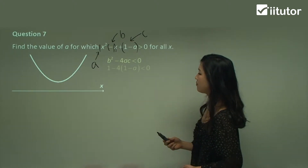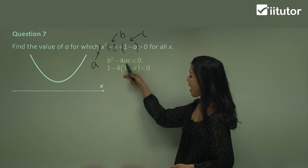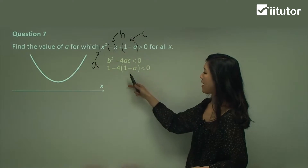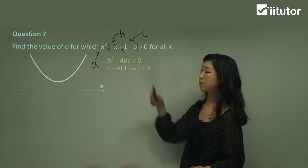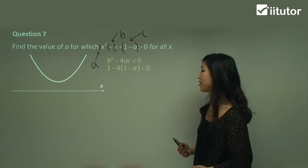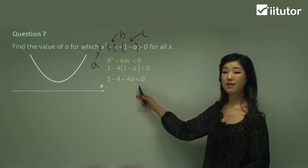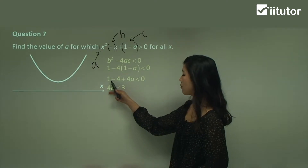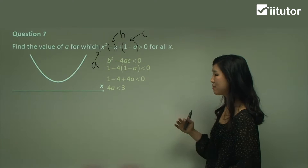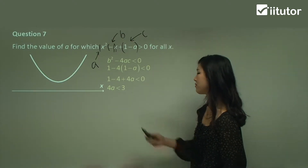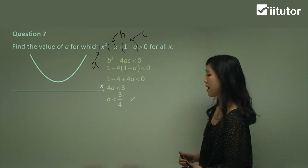Don't get mixed up with that. b is -1, so (-1)² = positive 1. Then minus 4 times a (which is 1) times c (which is 1 - a), so I get: 1 - 4(1 - a) < 0. Simplifying: 1 - 4 + 4a < 0, which gives -3 + 4a < 0. Moving -3 over, it becomes 4a < 3. Dividing both sides by 4: a < 3/4.